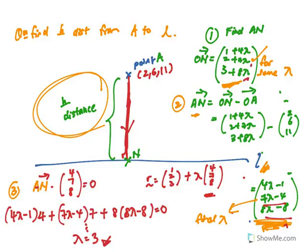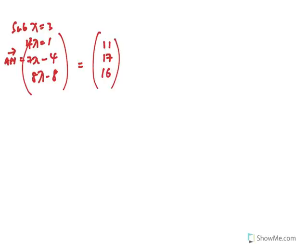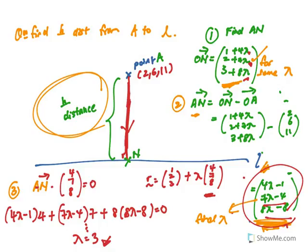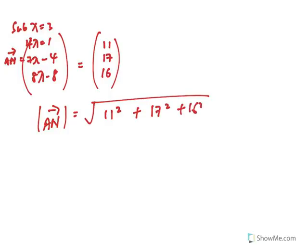That gives you your λ. After substituting λ = 3 into AN = (4λ−1, 7λ−4, 8λ−8), you get specific values — for example (11, 17, 16). After that, the perpendicular distance is just the magnitude: √(11² + 17² + 16²). That's the first method.